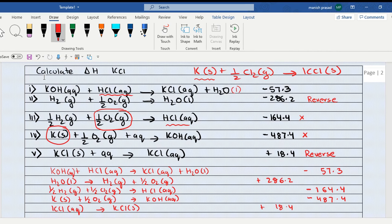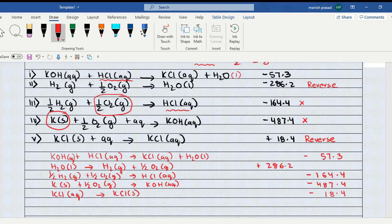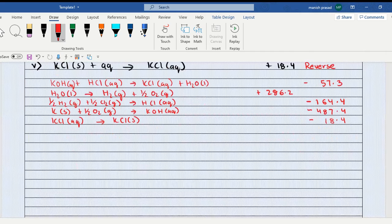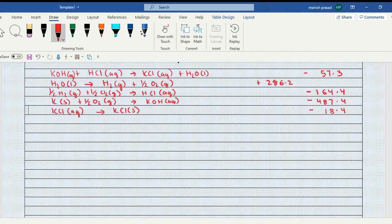So the question ko hamne convert kar diya. Negative 18.4, yes, we'll write it on the other side. So negative 18.4. Wo aqueous cut gaya. Let's start cancelling the things. KOH aqueous cancels, HCl aqueous cancels, KCl aqueous cancels, H2O liquid cancels.